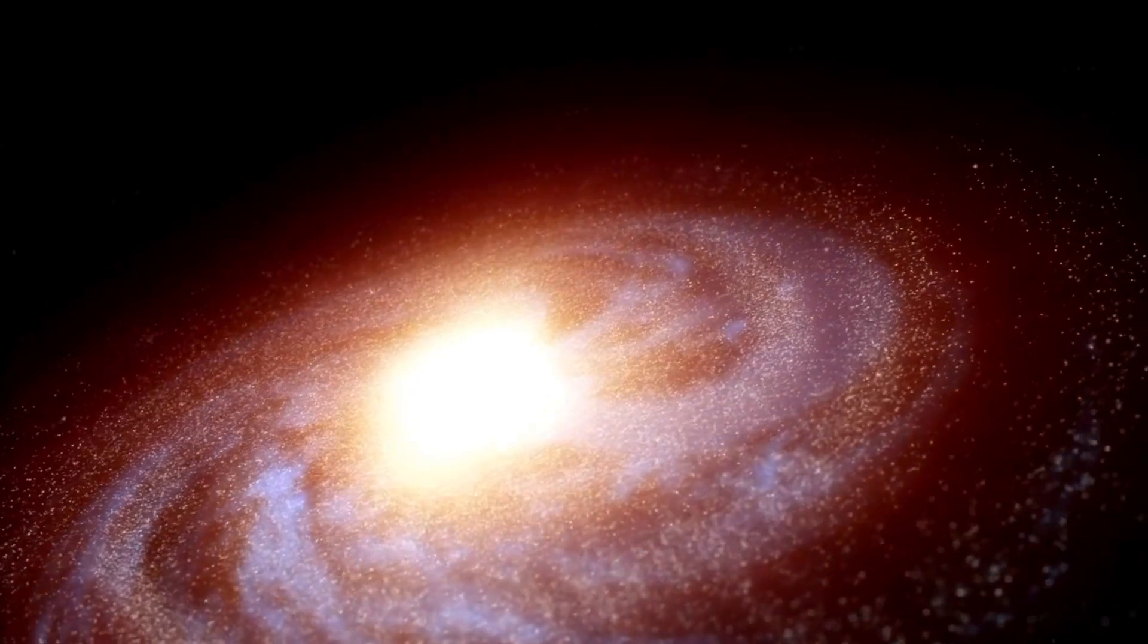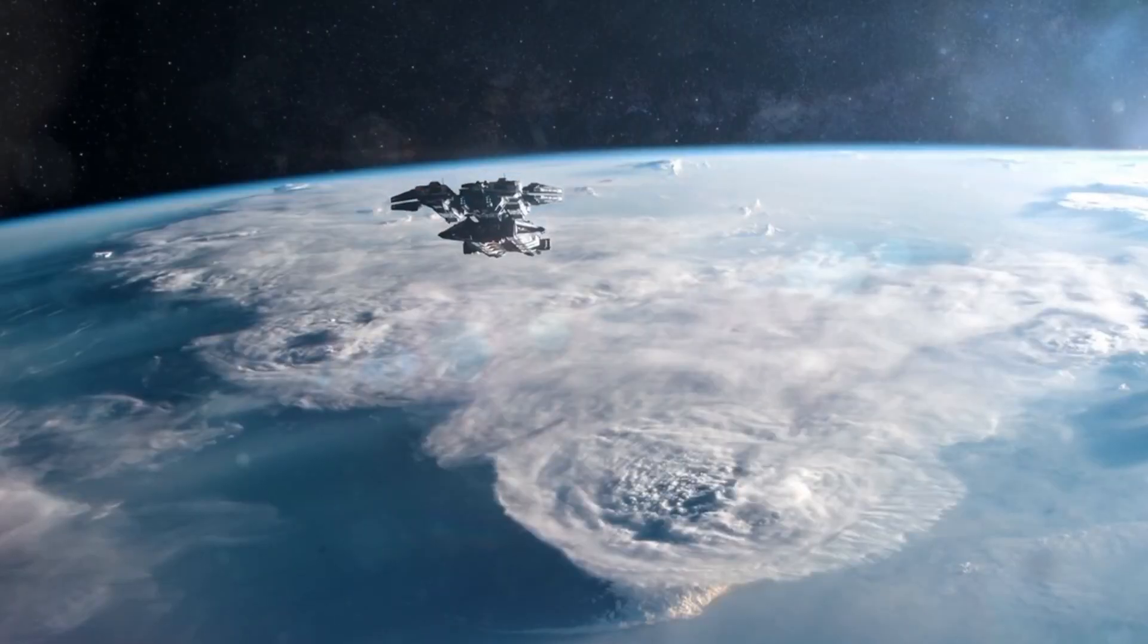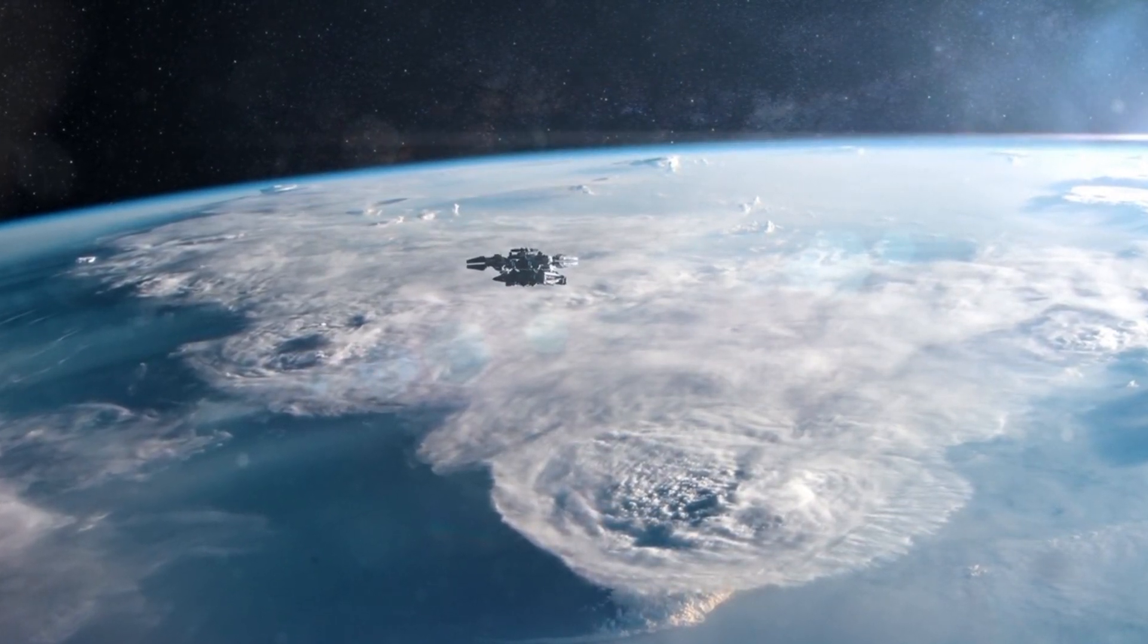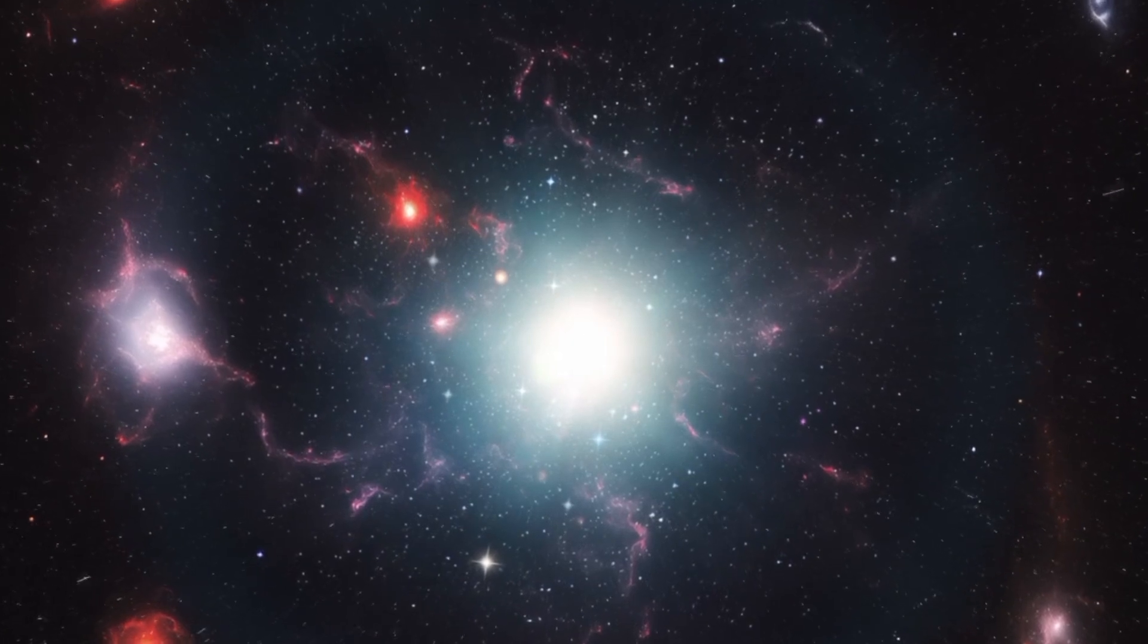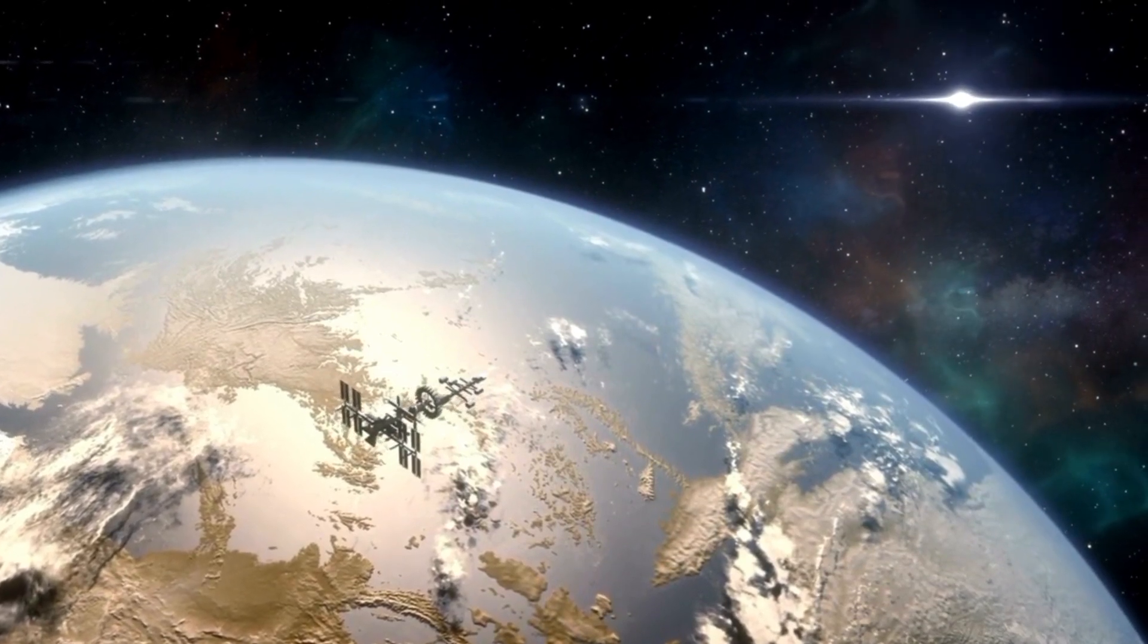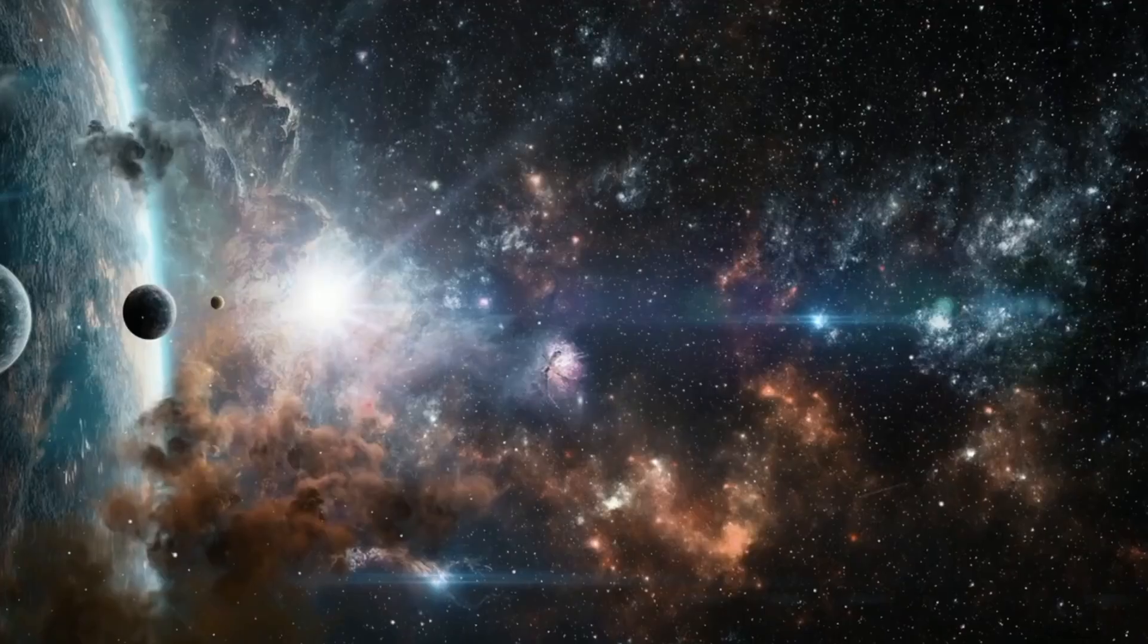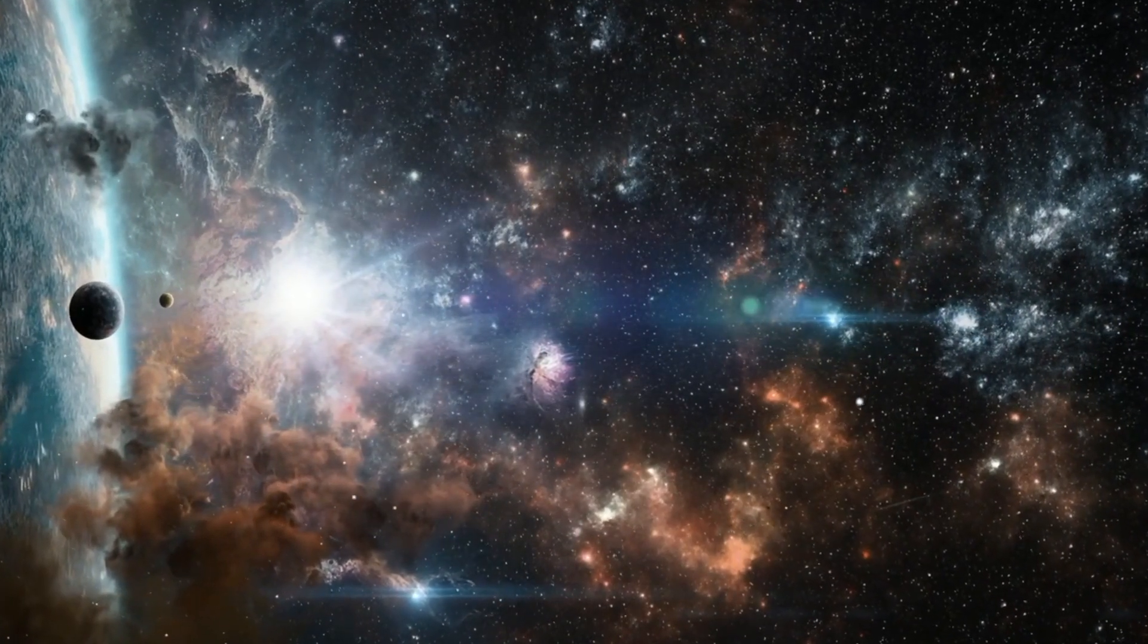Betelgeuse is a red supergiant star located in the constellation Orion, roughly 6,425 light-years from Earth. Its distance from us makes it one of the most studied and captivating stars in the night sky. The Hipparcos astrometric satellite has furnished us with important data about the distances of celestial objects. Based on its data, it has been determined that the distance to this specific object is roughly 430 light-years away.